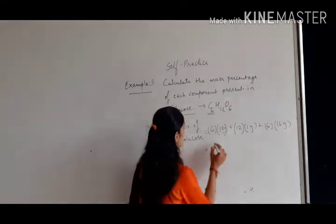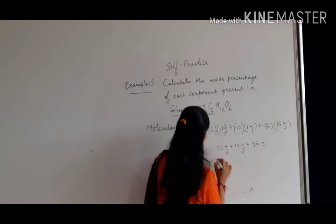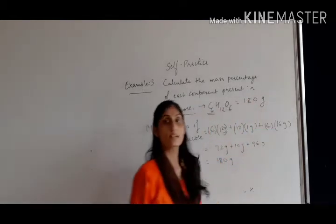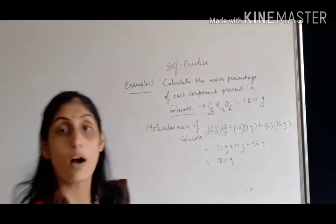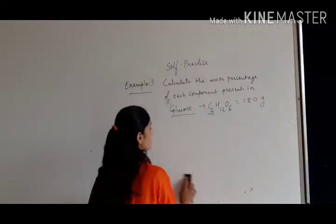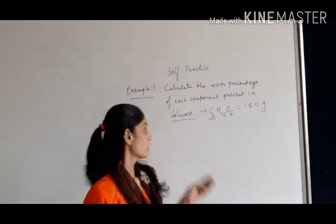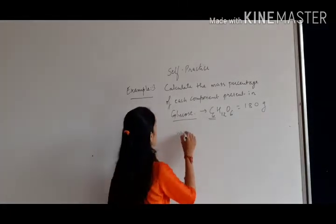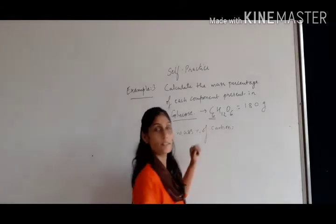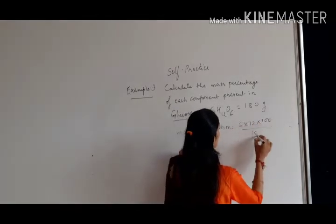When we calculate: 6 into 12 (carbon) plus 12 into 1 (hydrogen) plus 6 into 16 (oxygen), the molecular mass of glucose comes out to 180 grams per mole. Now for the mass percentage of each element, we find the mass percentage of carbon, which is equal to the number of carbon atoms (6) into atomic mass (12) into 100, upon 180 percent.